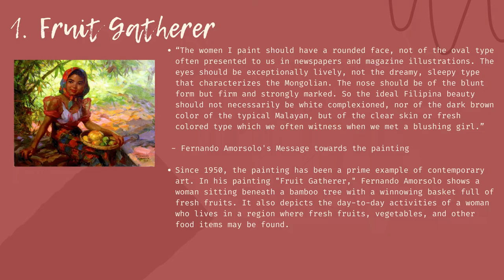Works of Fernando Amorsolo y Cueto. First: Fruit Gatherer. Amorsolo's message towards this painting was: 'The women I paint should have a rounded face, not of the oval type often presented in newspapers and magazine illustrations. The eyes should be exceptionally lively, not the dreamy, sleepy type that characterizes the Mongolian. The nose should be of the blonde form but firm and strongly marked. So the ideal of Filipino beauty should not necessarily be white complexion, nor of the dark brown color of the typical Malayan, but of the clear skin or fresh-colored type which we often witness when we meet a blushing girl.' This was Fernando Amorsolo's message toward the painting.